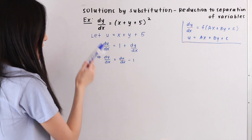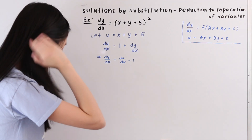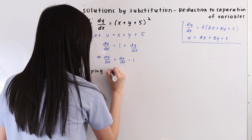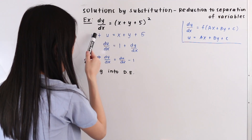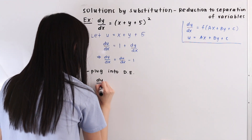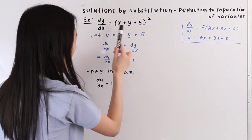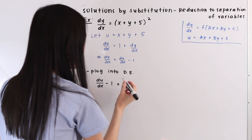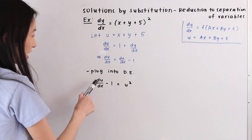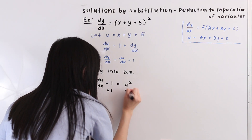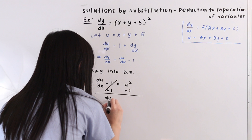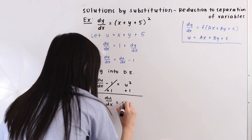Now let's plug this into our differential equation. For dy/dx, let's substitute in du/dx minus 1. So we have du/dx minus 1 is equal to, and for x plus y plus 5, let's substitute in u. So on the right hand side we just have u squared. Next, let's solve for du/dx by adding 1 to both sides. These two cancel out and we have du/dx is equal to u squared plus 1.